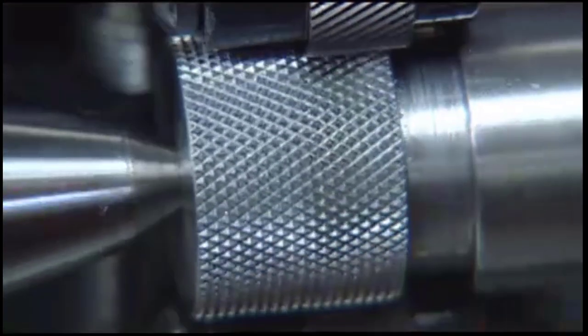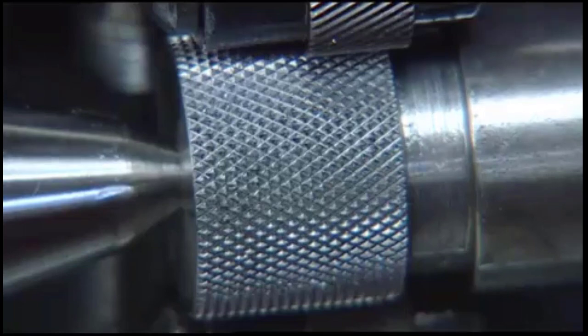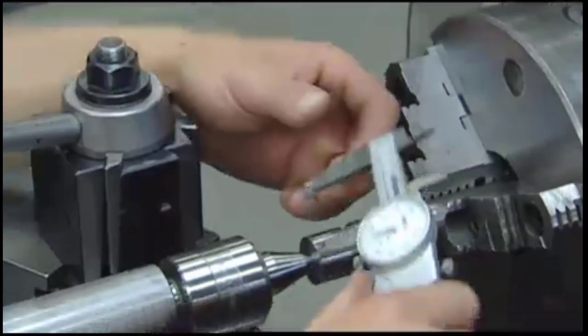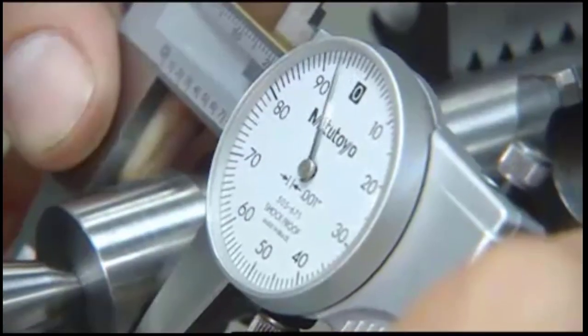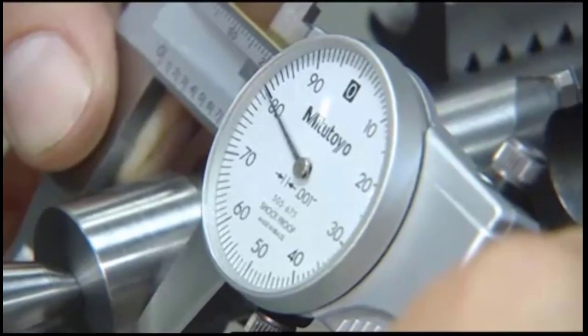Knurling causes the material surface to become raised, so if you're using a medium diamond knurling tool, make sure that the workpiece diameter is about 20 thousandths of an inch smaller than the final desired knurl diameter.